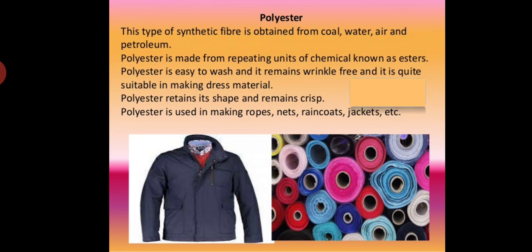Polyester is very easy to wash. It is wrinkle-resistant — meaning it does not crease or shrink. It is quite suitable for making dress material. Polyester maintains its shape and is very crisp. It is also used in making ropes, nets, raincoats, and jackets.